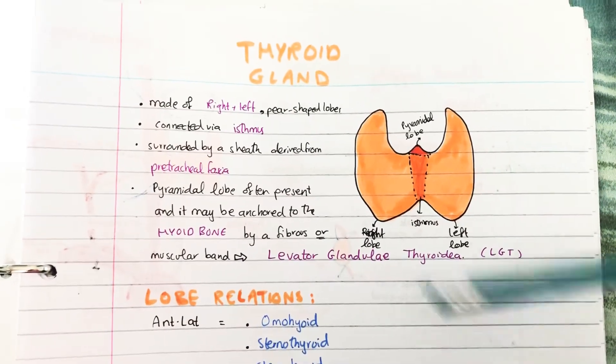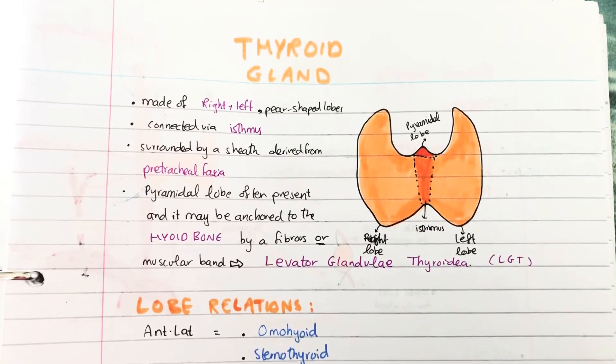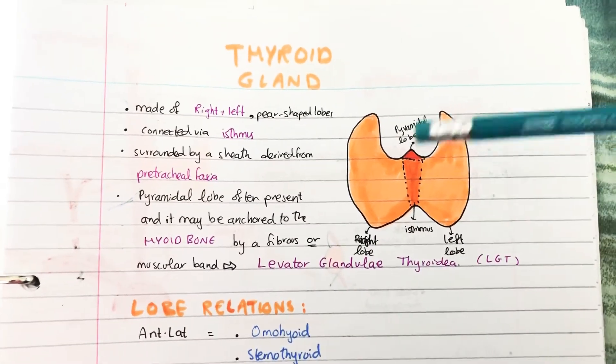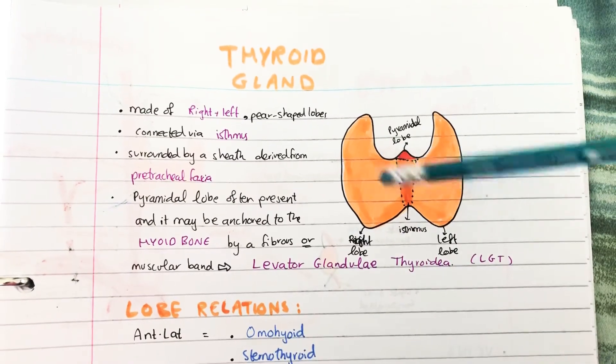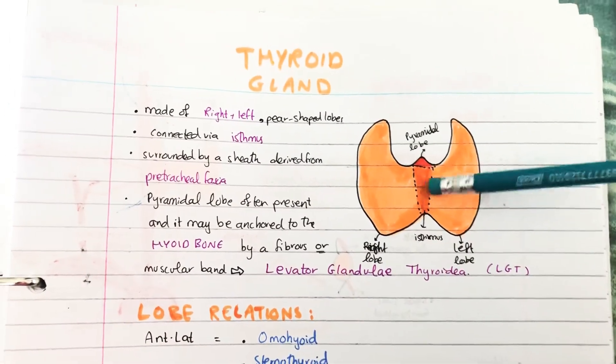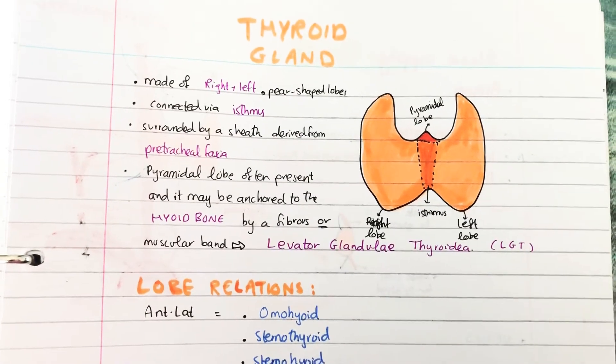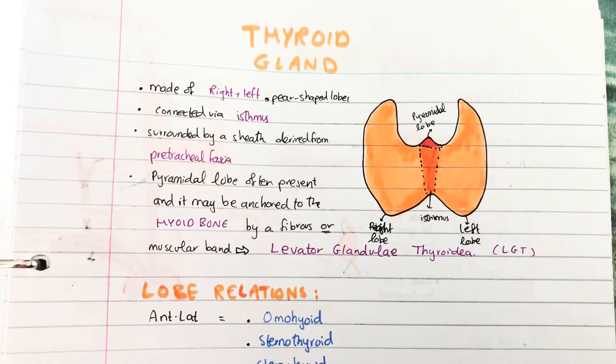This is a drawing of the thyroid gland. It is made of right and left pear-shaped lobes because they kind of look like pears, and they are connected via the isthmus which is basically like a bridge. It is surrounded by a sheath which is derived from the pre-tracheal fascia.